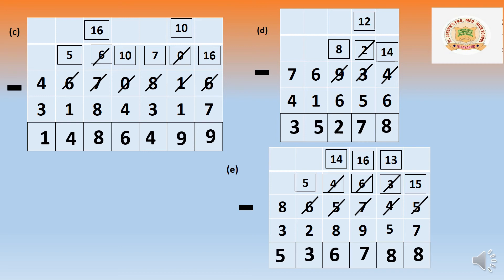Now 5 minus 2 — easily done, equals 3. Last digits: 8 minus 3 equals 5. So the answer is 5,36,788. Now let us move to the next question, that is f.